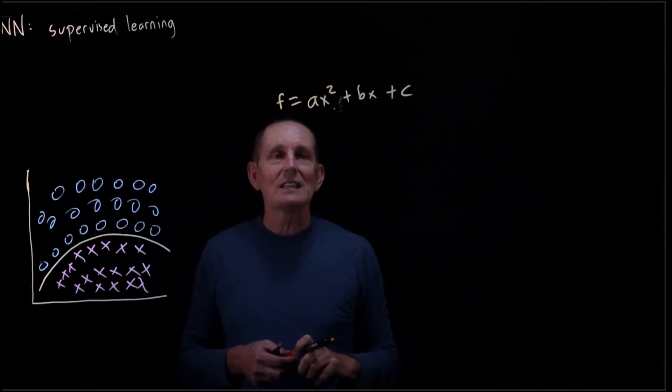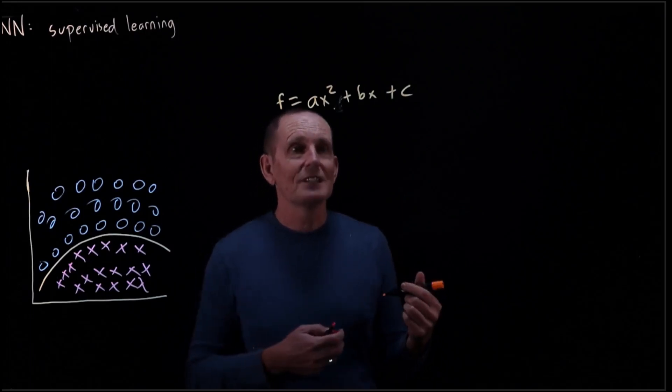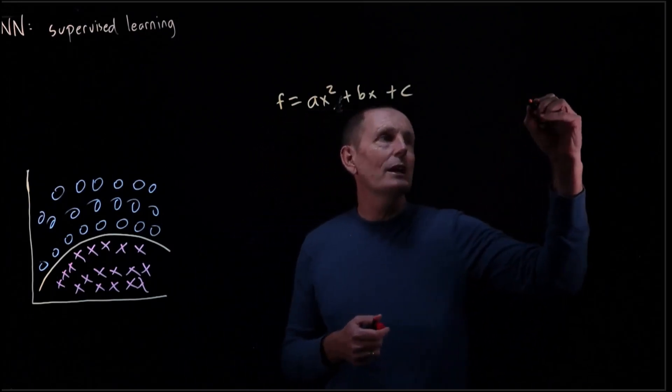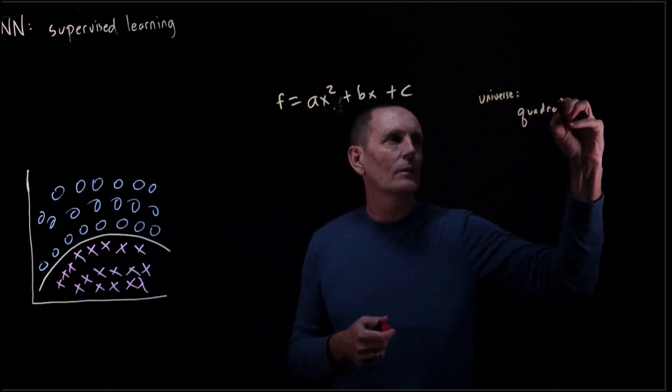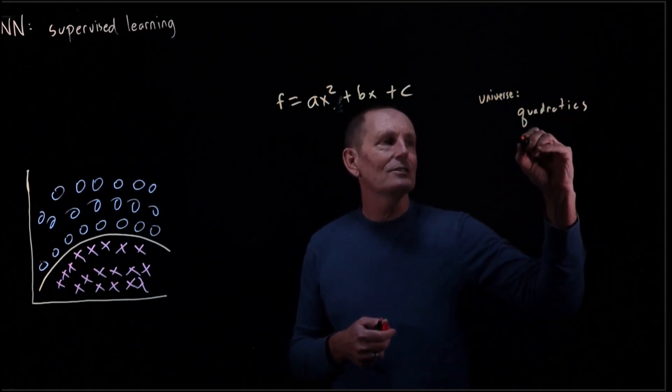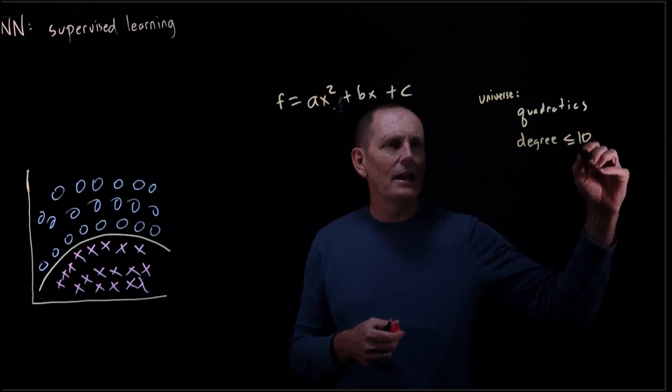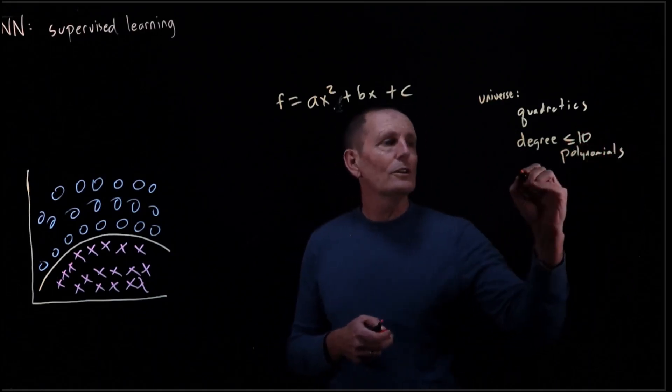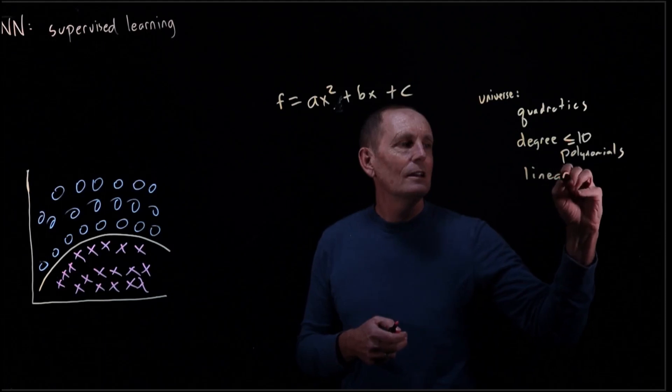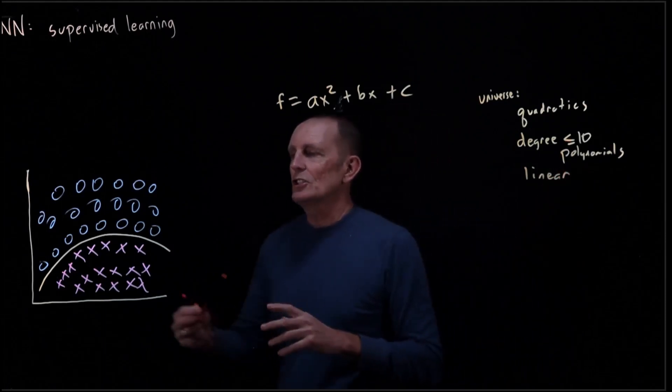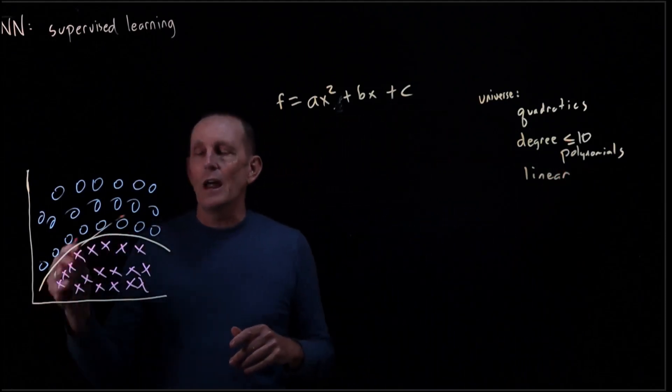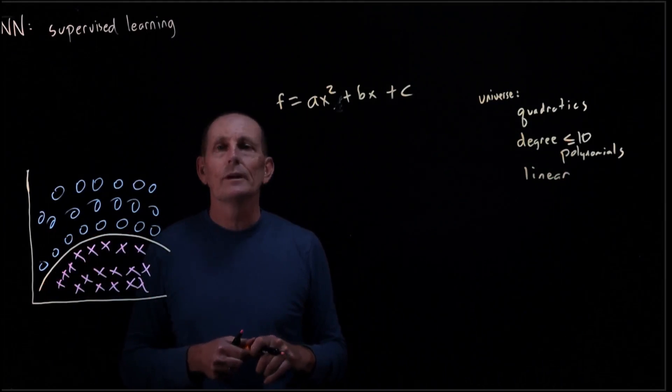Our universe of possible functions we could have decided ahead of time was quadratics. Or we could have decided it's all degree less than or equal to 10 polynomials. We could have decided it's linear, in which case we couldn't have gotten this function.